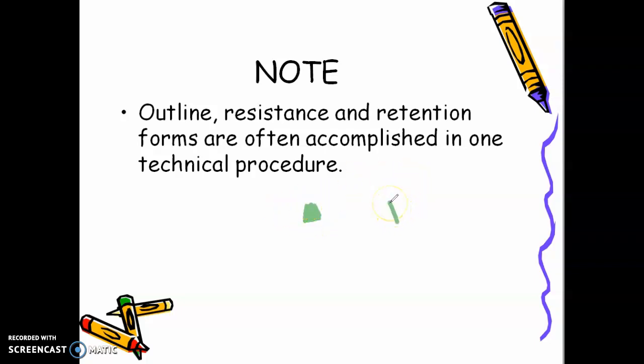Then the mesiodistal walls, 2 to 5 degrees only. Mesiodistal walls slightly diverging towards the occlusal is resistance form. You are following the direction of the enamel rods to prevent fracture of the tooth or the restoration. When your buccal and lingual walls are converging towards the occlusal, that is retention form to prevent dislodgement or displacement of your restoration.